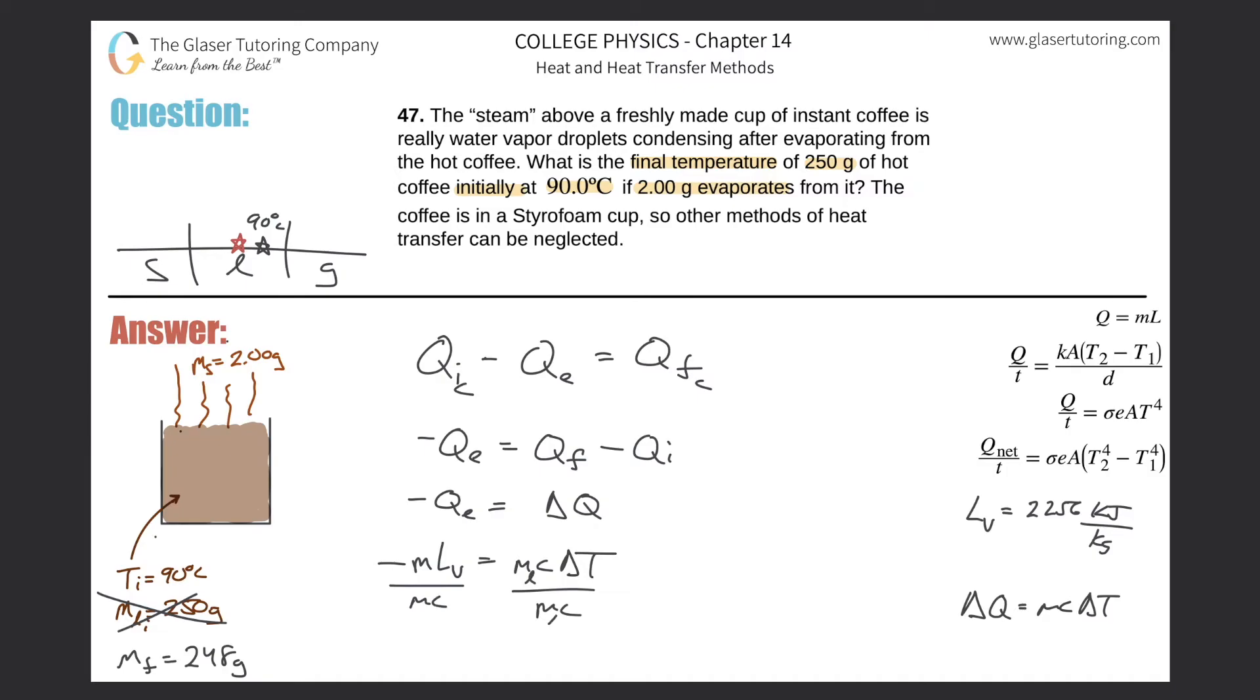Let's solve for delta T. Divide out mc from both sides. Remember these masses are not the same—this is the mass of the liquid and this is the mass that has evaporated. Delta T equals negative the mass that evaporated times latent heat of vaporization divided by the mass of the liquid remaining, multiplied by the specific heat of that liquid.